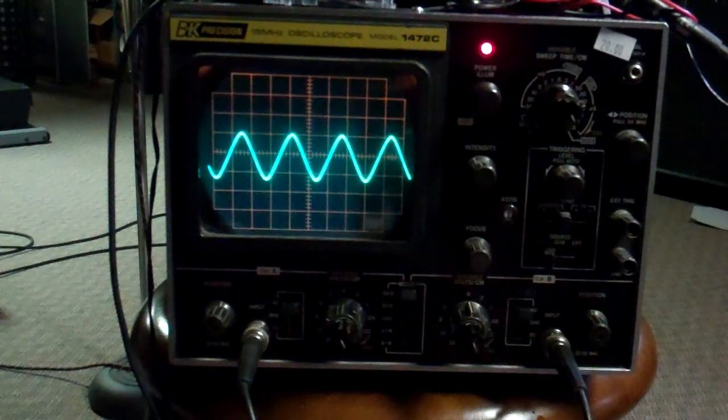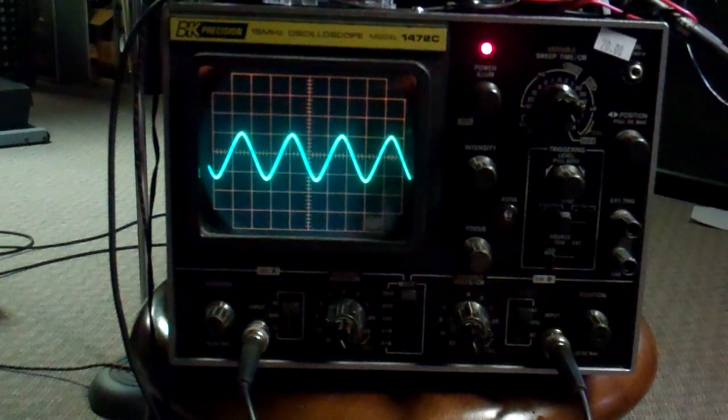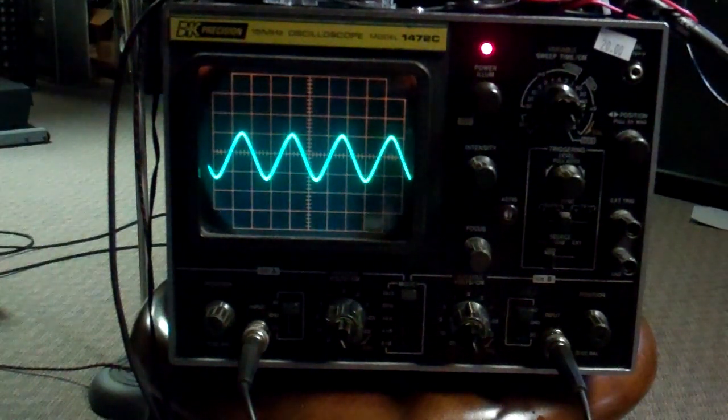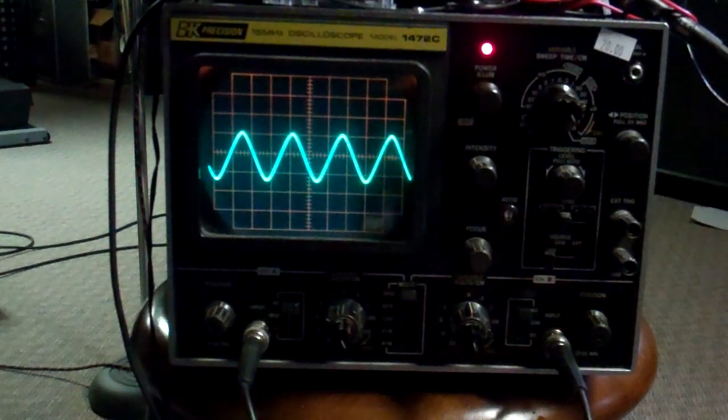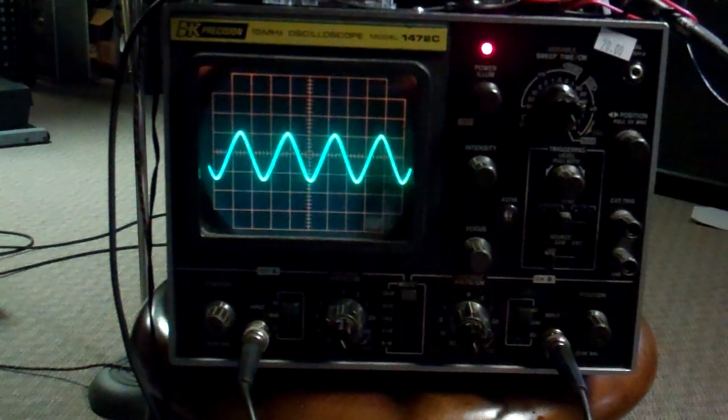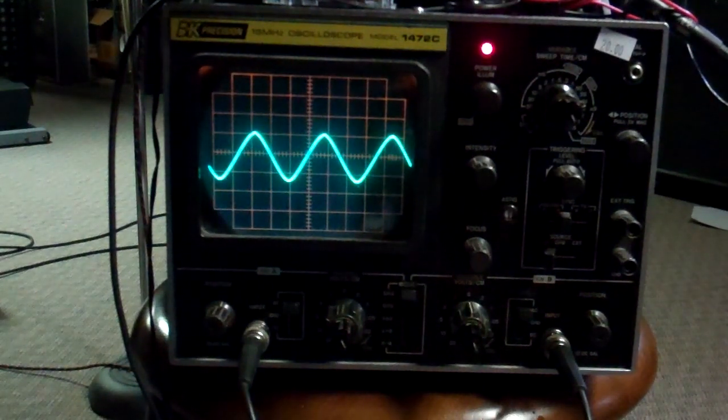And of course it doesn't. Channel A actually looks really good. This is channel A with my audio generator—I can adjust amplitude and frequency. Seems to work okay, sounds good.